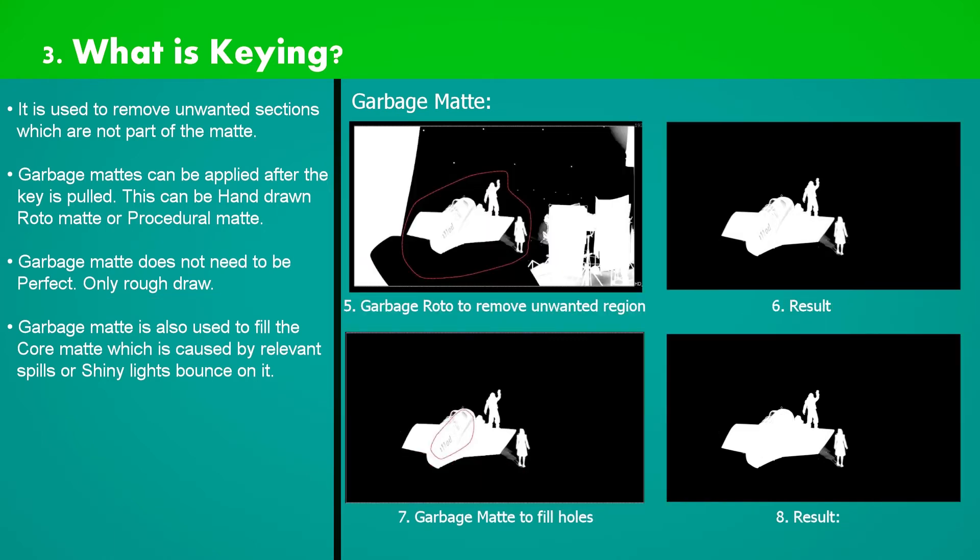Garbage matte is also used to fill up the holes on mat which are caused by shiny lights or color spill bounce on it. So let's look at this example.